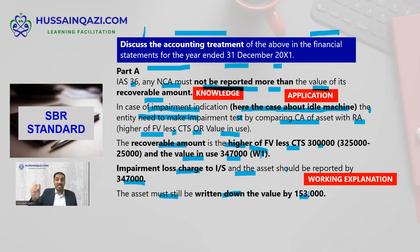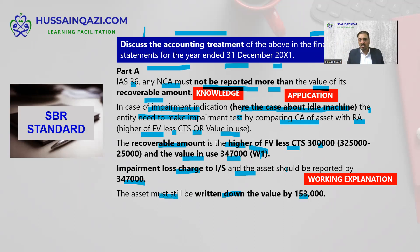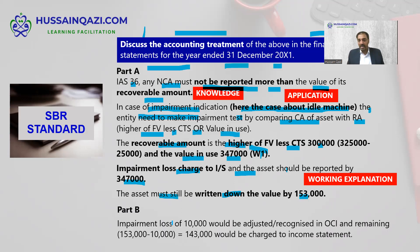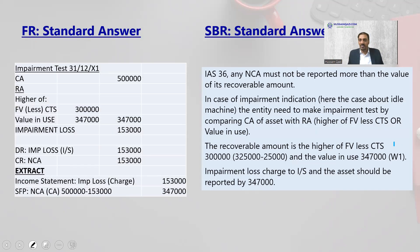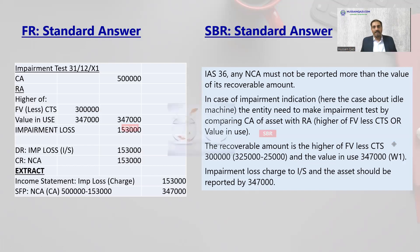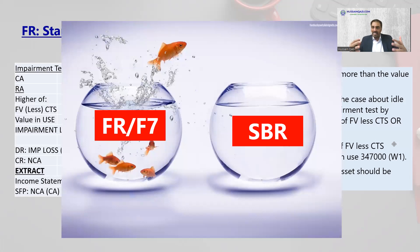Is it necessary to write the knowledge exactly with standard wording? No — use your own wordings. Like this: 'IAS 36 says that any non-current asset must not be reported more than the value of its recoverable amount.' Now, part B — this is the FR standard answer, and this is the SBR standard answer. I hope that your mind has transformed from F7 to SBR. Once again, welcome to SBR.